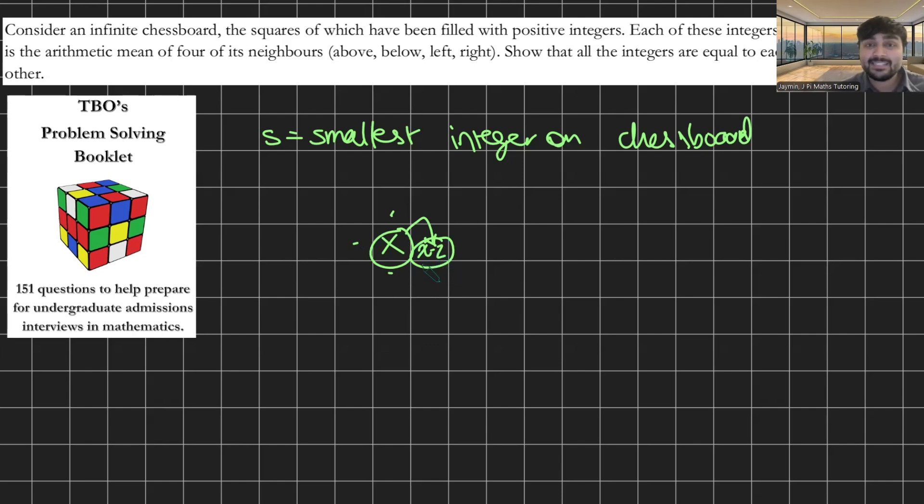And now you can rinse and repeat the same argument. In fact, now you're guaranteed to get a square next to X minus two that's smaller than X minus two. Why is that? Because these four squares here average out to X minus two, but we have a square that's already bigger than X minus two. And so therefore one of the neighbours has to be smaller than X minus two. And in which case you get that guy there, let's say, and let's say that's X minus three. And again, you can repeat the argument. There's got to be a neighbour of X minus three, let's say this guy that's smaller than X minus three. But then you get a sequence of decreasing numbers.